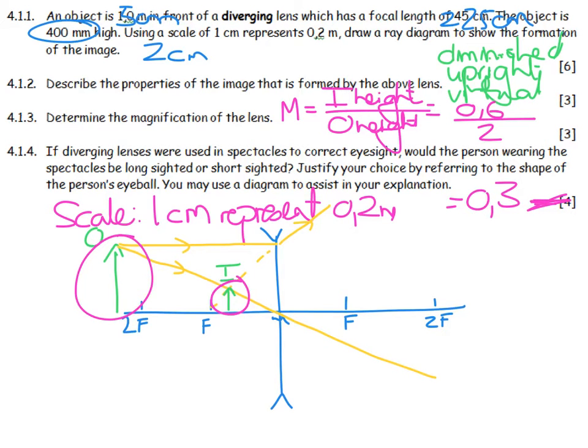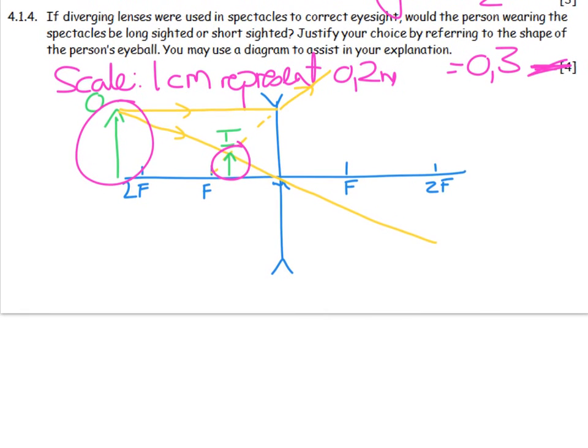If a diverging lens was used in spectacles to correct eyesight, would the person be wearing spectacles for long-sightedness or short-sightedness? Justify your answer by referring to the shape of the eyeball, and you can use a diagram. So I am going to start off by saying,